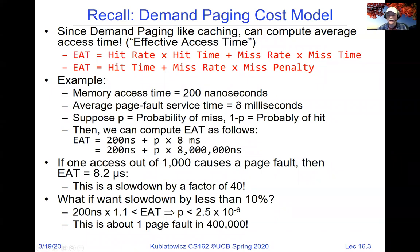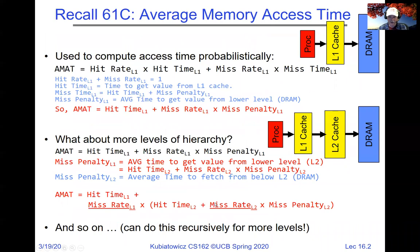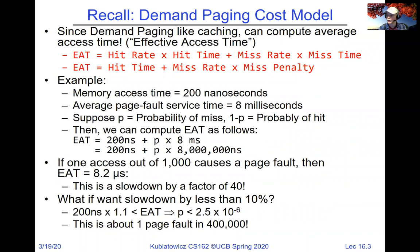You could put a cache in front of this hierarchy — the effective access time for DRAM-to-disk can itself be used as the miss penalty in a higher-level AMAT equation, making the hierarchical measurement generally useful. This hit time plus miss rate times miss penalty structure works at every level. Make sure there are no questions on this before we move on.